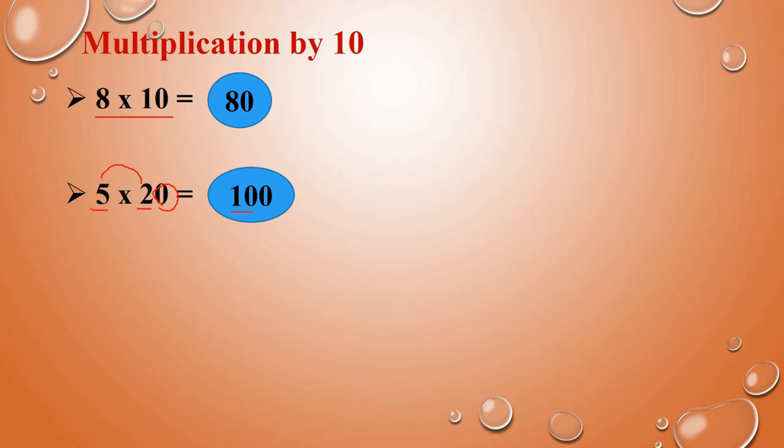5 twos are 10. Here already there is a zero. That zero we have to add. So, the answer is 100.